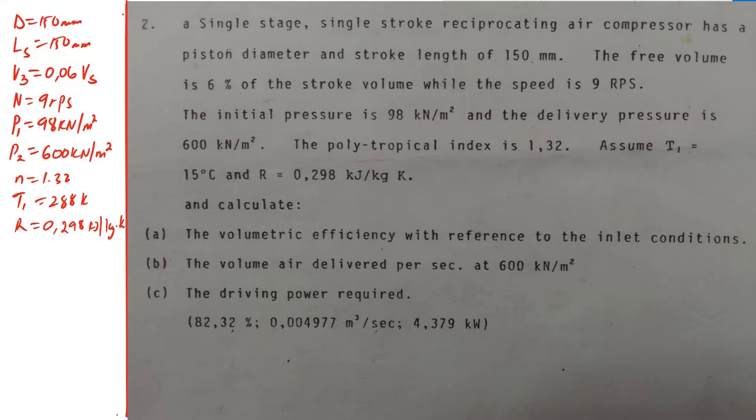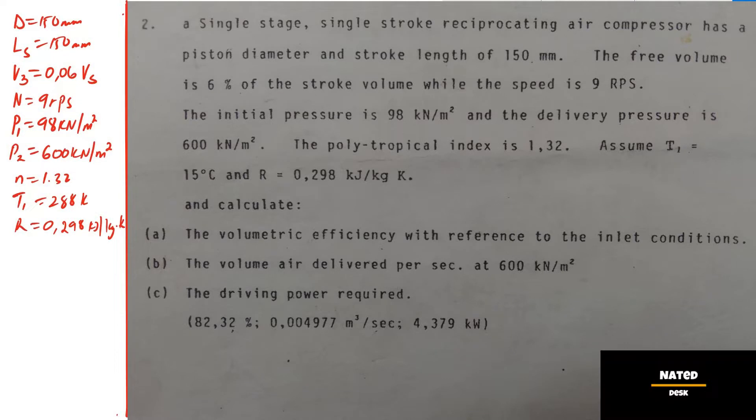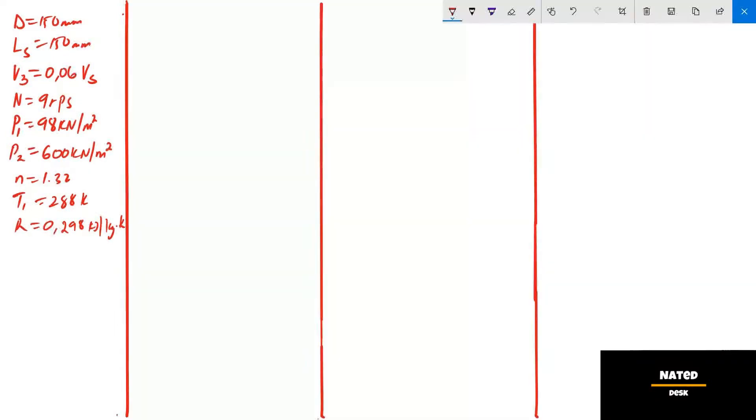Part A: The volumetric efficiency with reference to the inlet conditions. Part B: The volume air delivered per second at 600 kN per square meter. Part C: The driving power required.